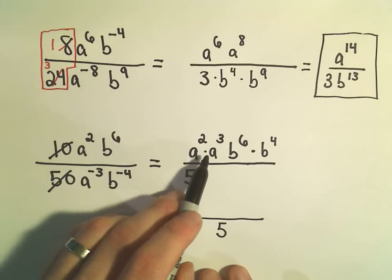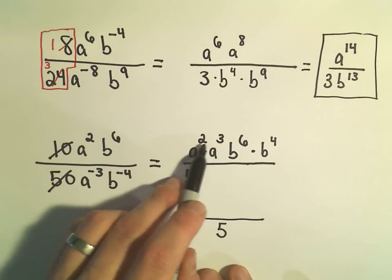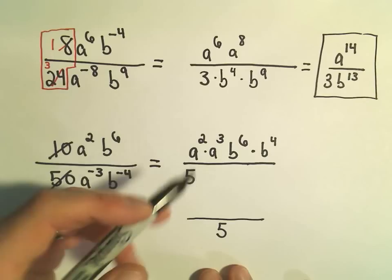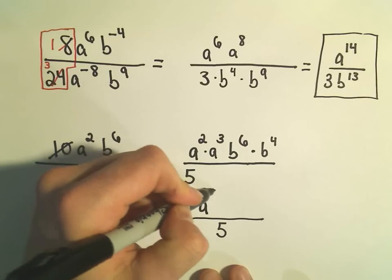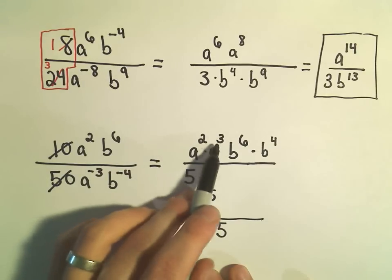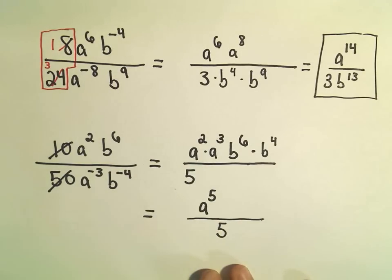And now we have a to the 2nd times a to the 3rd. Be careful here. Again, we add the exponents. So that's an a to the 5th power. It would be easy again to make that an a to the 6th power, which would be incorrect. So be careful about that.